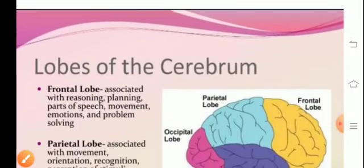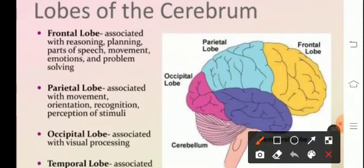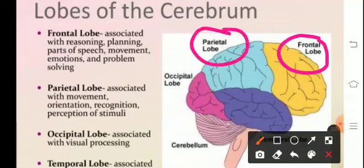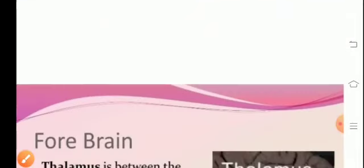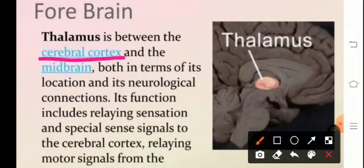The frontal lobe is associated with reasoning, parts of speech, movement, emotion, and problem solving. The occipital lobe is associated with visual processing. The temporal lobe is for auditory reception, or for hearing.